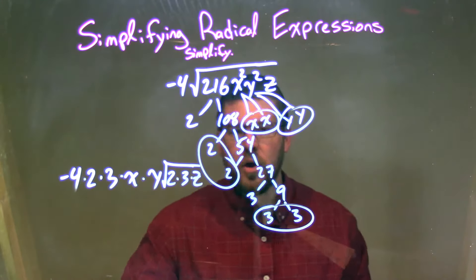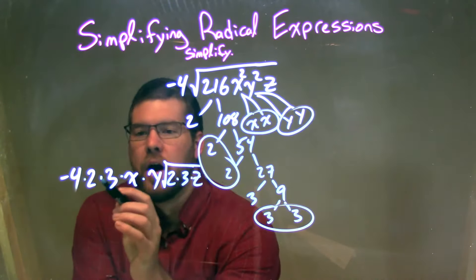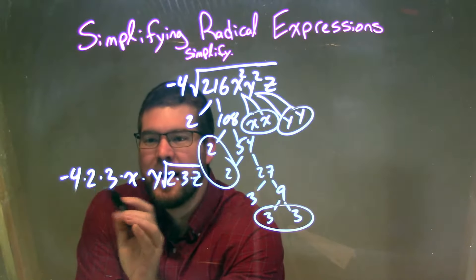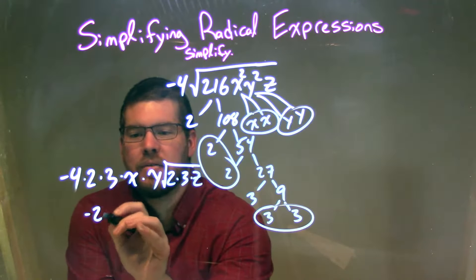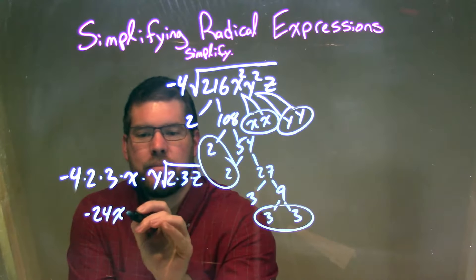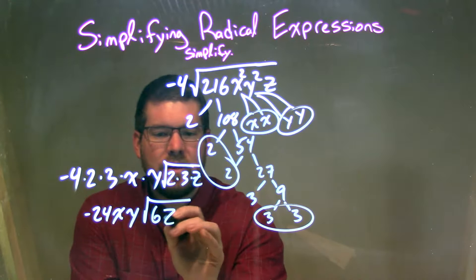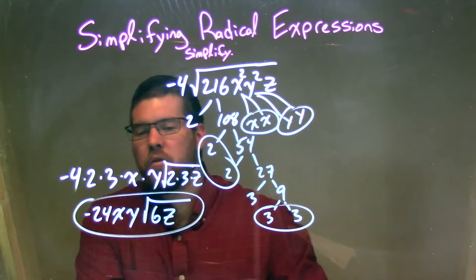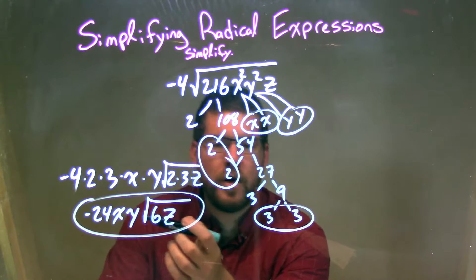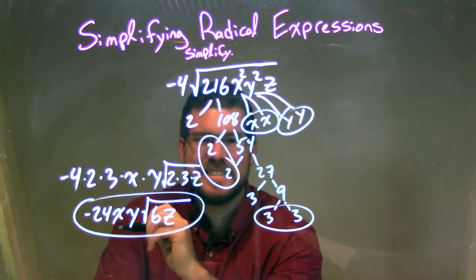So now, from there, we need to simplify that. Negative 4 times 2 is negative 8, times 3 is negative 24. So we have negative 24xy times the square root of 2 times 3, which is 6, z. And there we have it. Our final answer is negative 24xy times the square root of 6z.